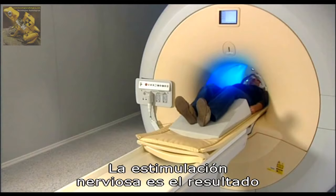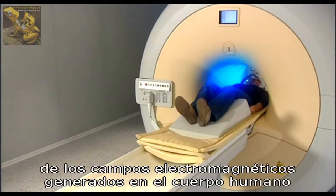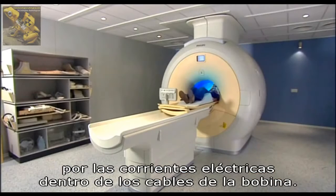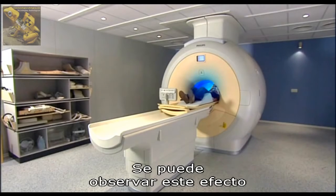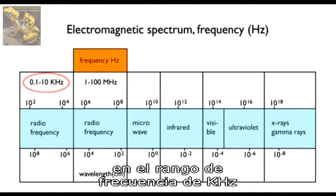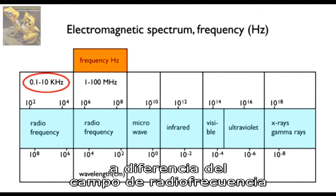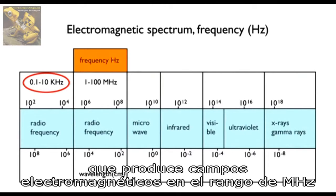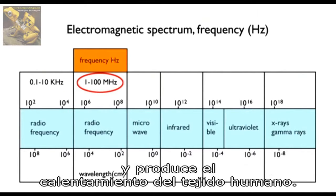The nerve stimulation results from the electromagnetic fields generated in the human body by the switched electric currents in the copper leads of the gradient coil. This effect is observed in the kilohertz frequency range, as opposed to the RF system which produces electromagnetic fields in the megahertz range and results in heating of the human tissue.